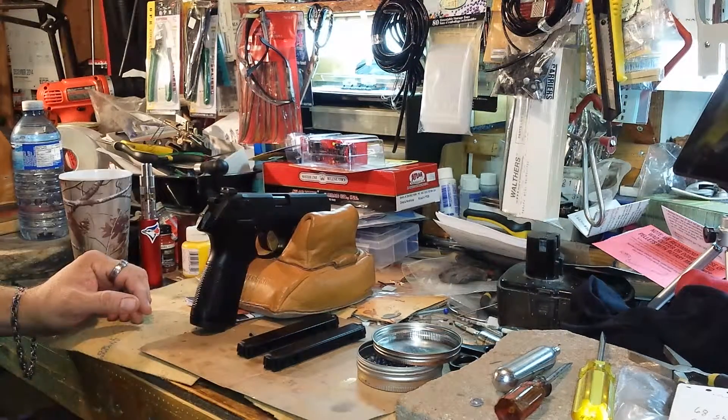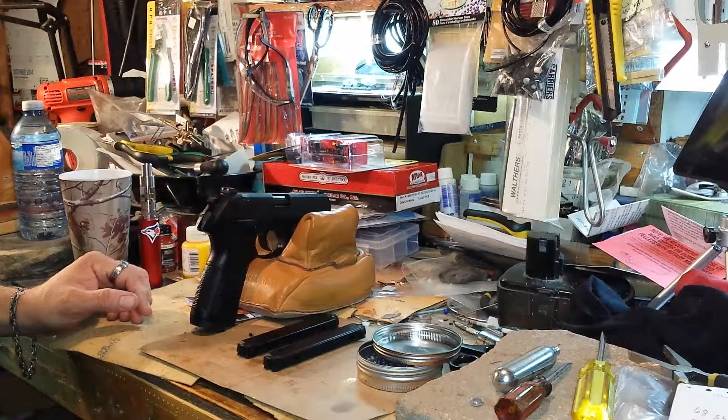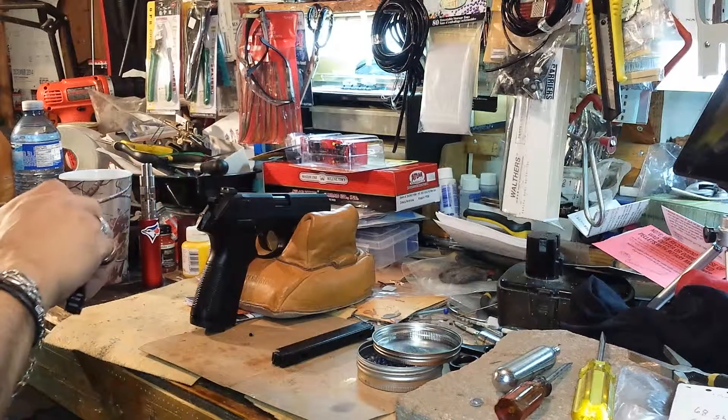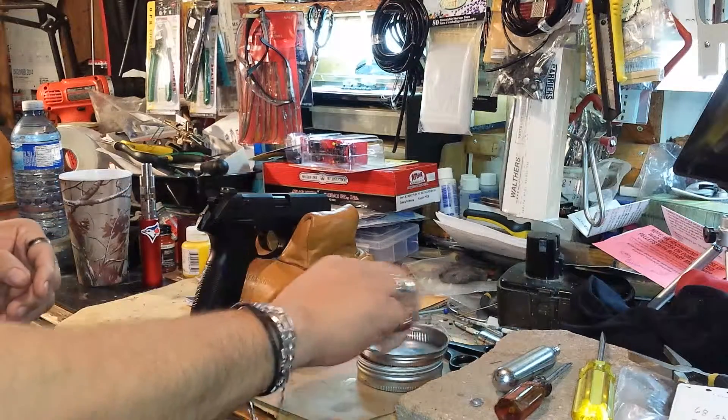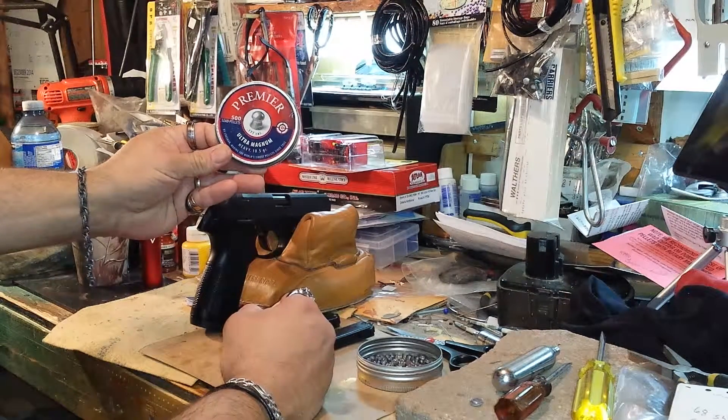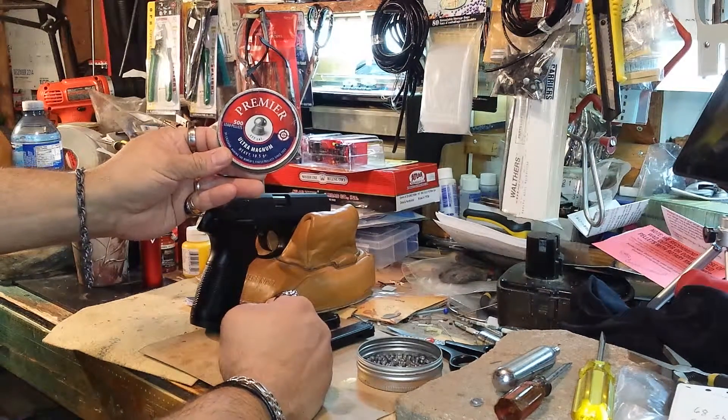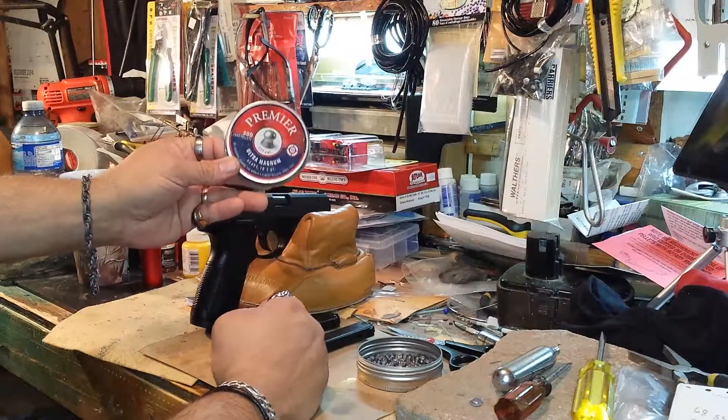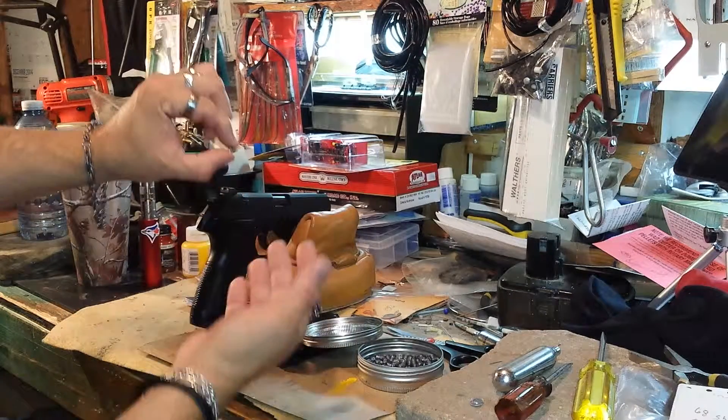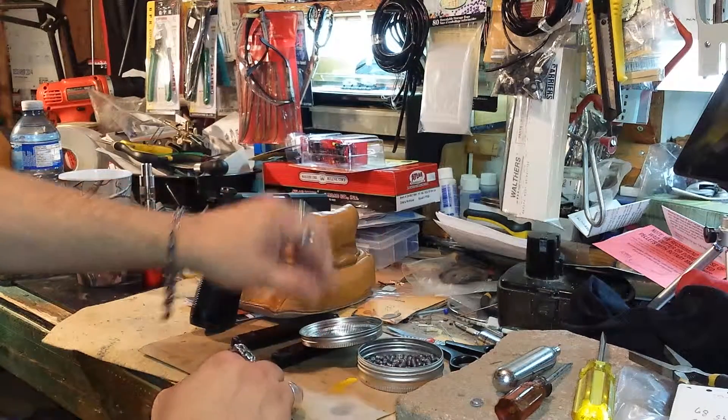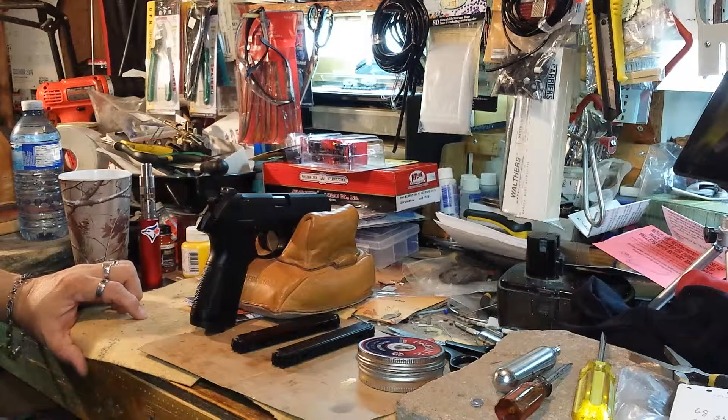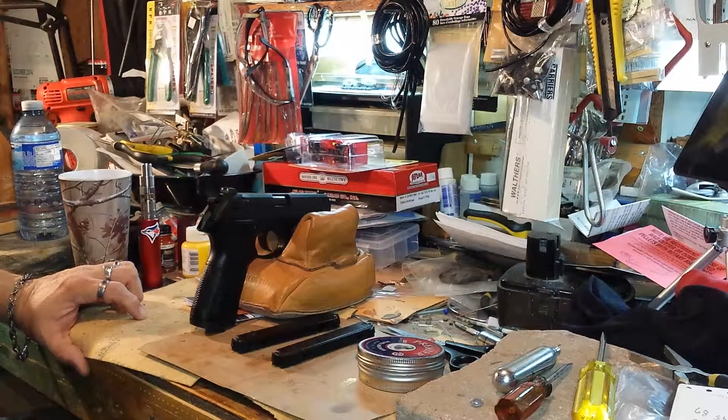But today I'm going to shoot, I've been wondering about a certain pellet that I have and I wanted to try and fire them out of this. And today I'm going to try the Crossman Premier Ultra Magnum Heavy 10.5 grain pellets. Now these pellets are a dome pellet and they're 2.6 grains heavier than the Crossman pointed pellets I've been shooting out of this.